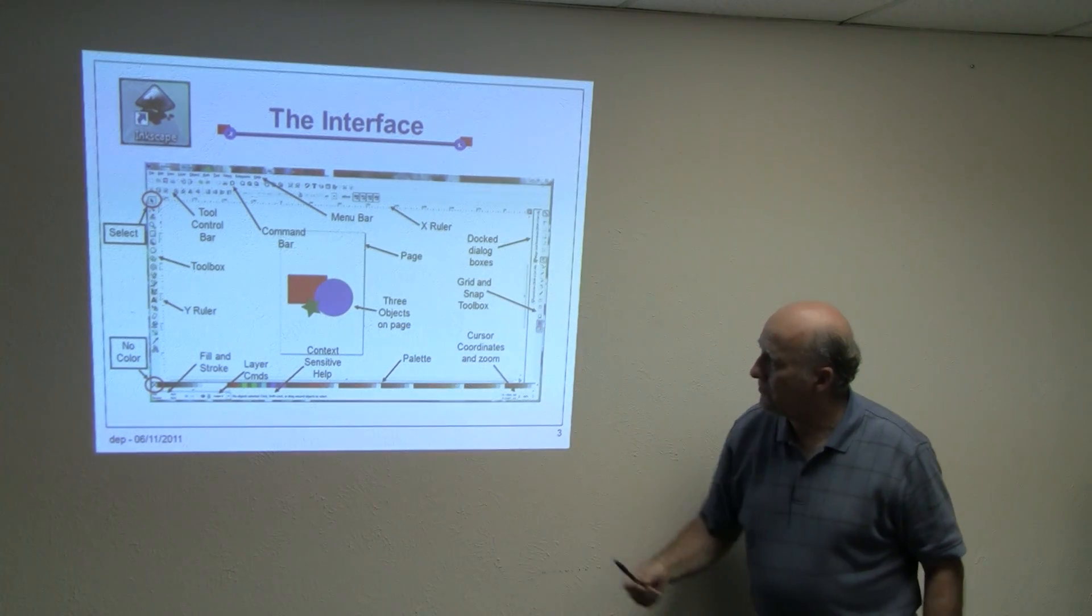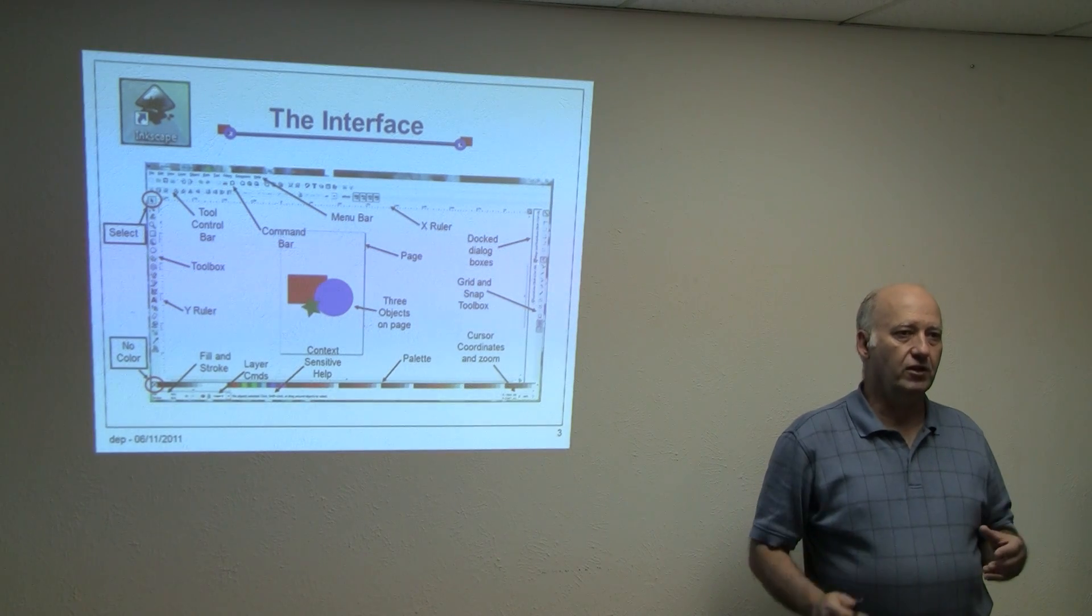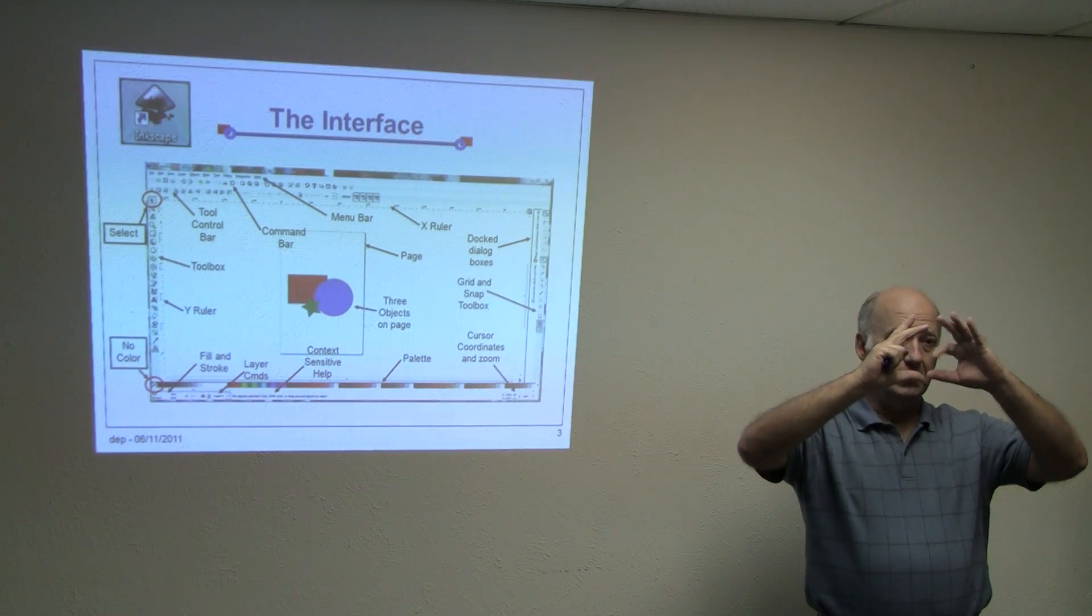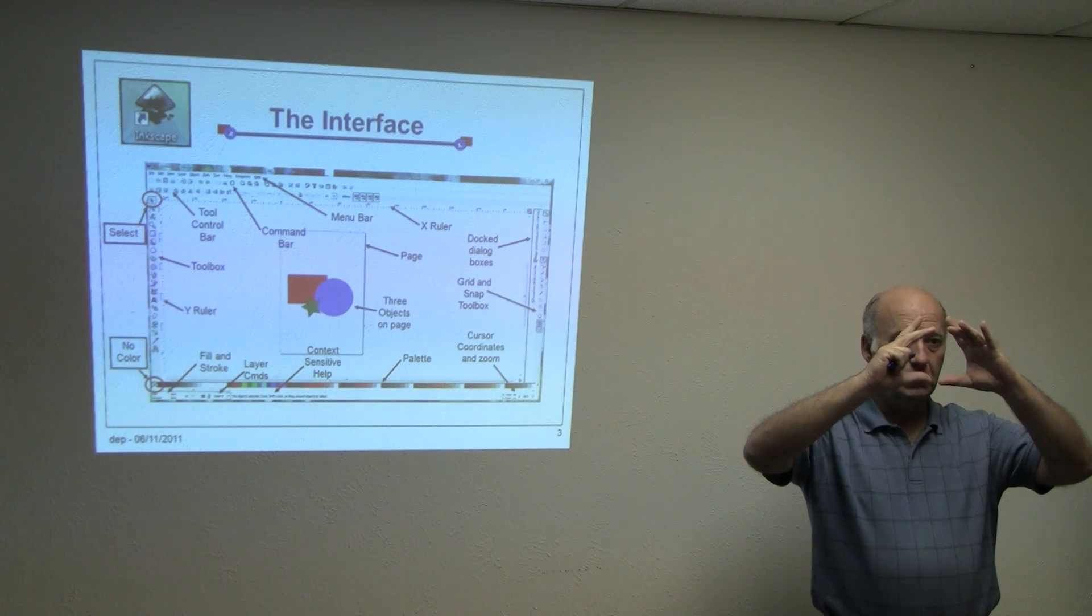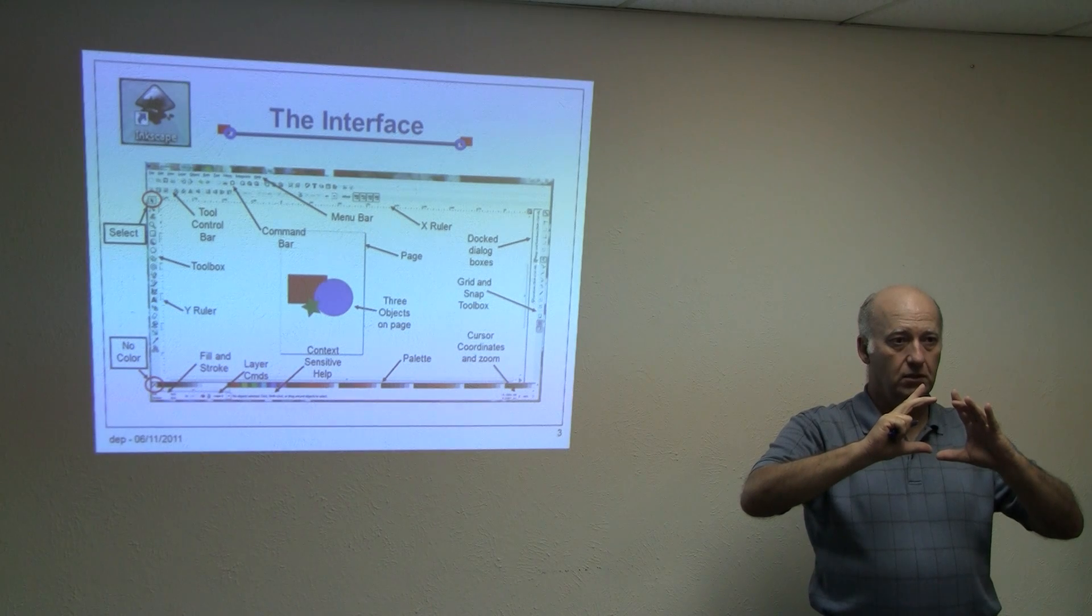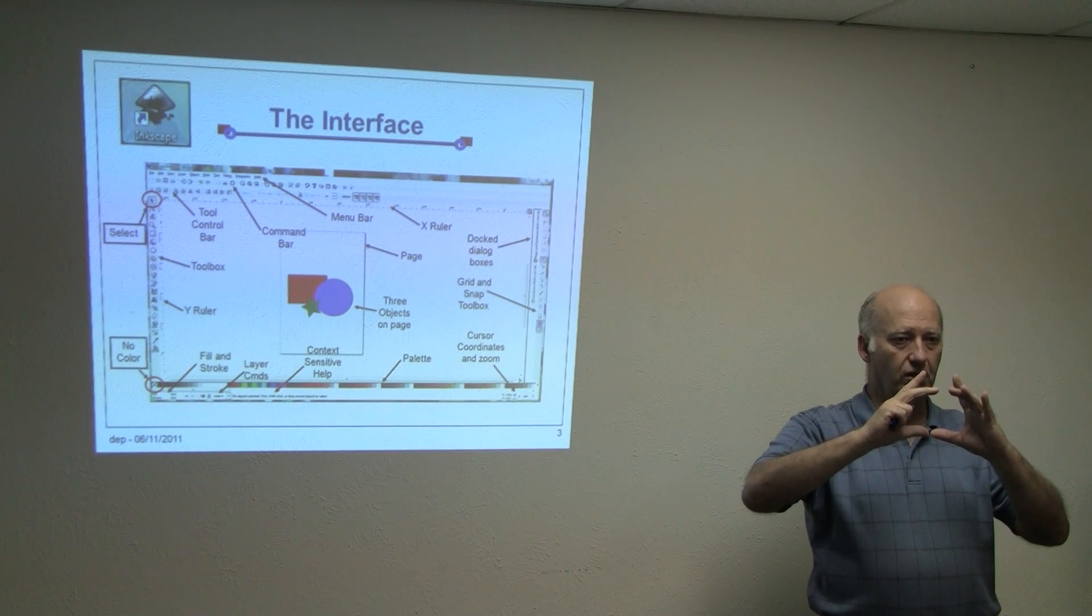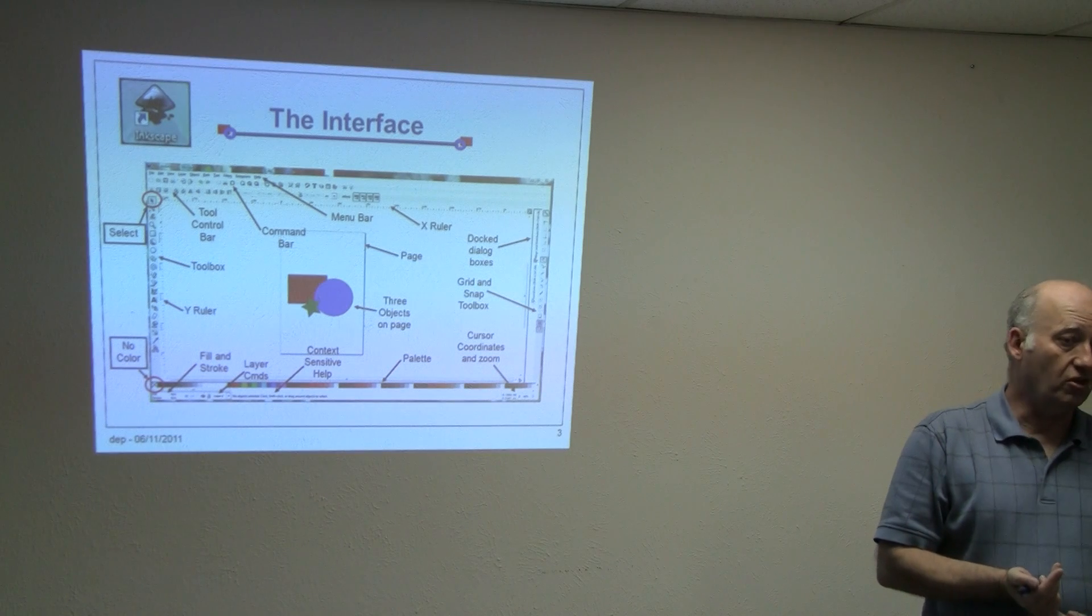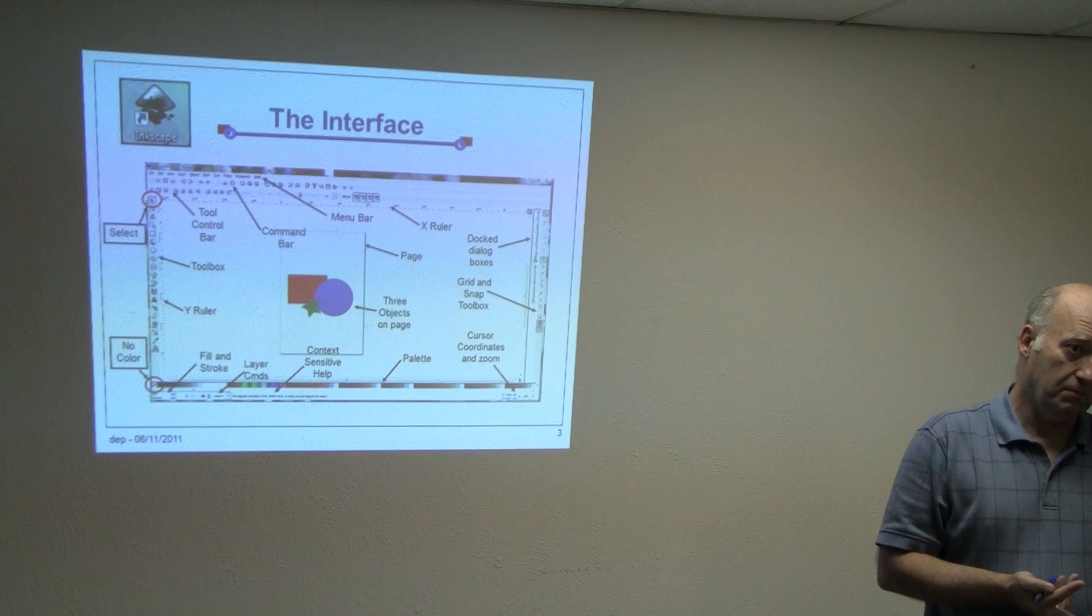Down at the bottom, there is something called fill and stroke. Now, when you have an object, let's say a circle, a circle is a closed object. The inside, if you want it colored, will be the fill. The outline of the circle will be the stroke. So you're constantly going to want to change the colors and the strokes, usually. Now, in actuality, in making parts, you're going to set the stroke. You're going to have the stroke not scale, and you're not going to use any fill.